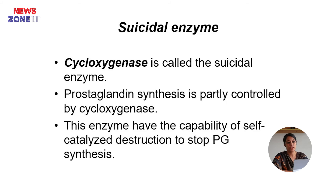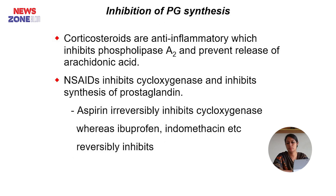Cyclooxygenase is called a suicidal enzyme. Prostaglandin synthesis is partially controlled by cyclooxygenase, and the enzyme has the capacity to self-catalyze its own destruction to stop prostaglandin synthesis — that is why it is known as a suicidal enzyme. Regarding inhibition of prostaglandin synthesis: corticosteroid anti-inflammatories inhibit phospholipase A2 and prevent release of arachidonic acid. Non-steroidal anti-inflammatories inhibit cyclooxygenase and inhibit synthesis of prostaglandins. Aspirin irreversibly inhibits cyclooxygenase, whereas ibuprofen and indomethacin reversibly inhibit it.